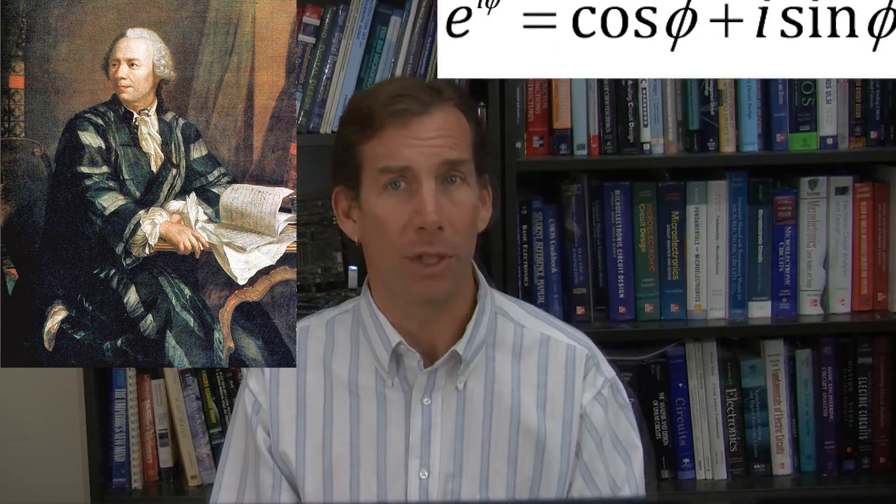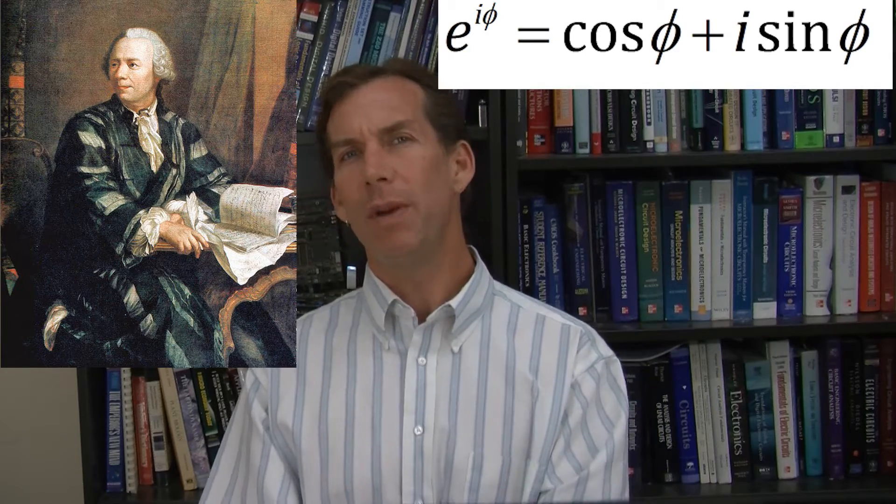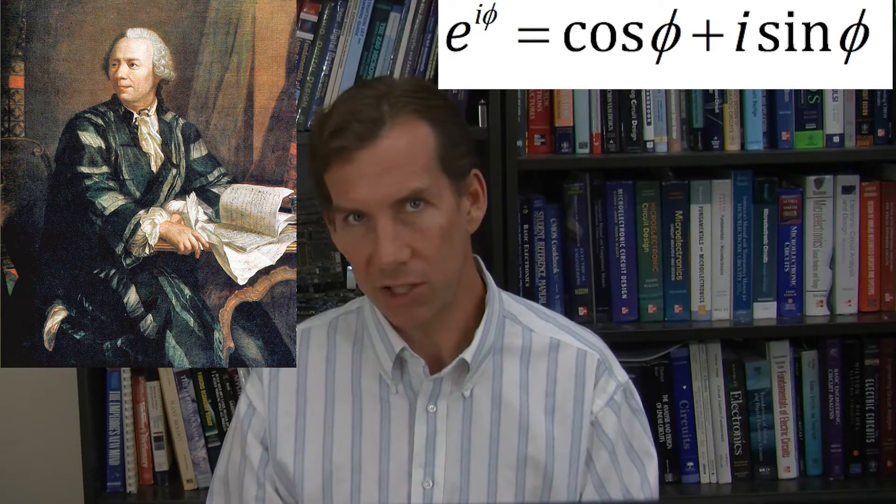Among many mathematical accomplishments, Leonhard Euler discovered the relationship between trigonometric functions and exponential functions, giving us Euler's formula: e to the i phi equals the cosine of phi plus i times the sine of phi, which may be the coolest mathematical expression known to man,